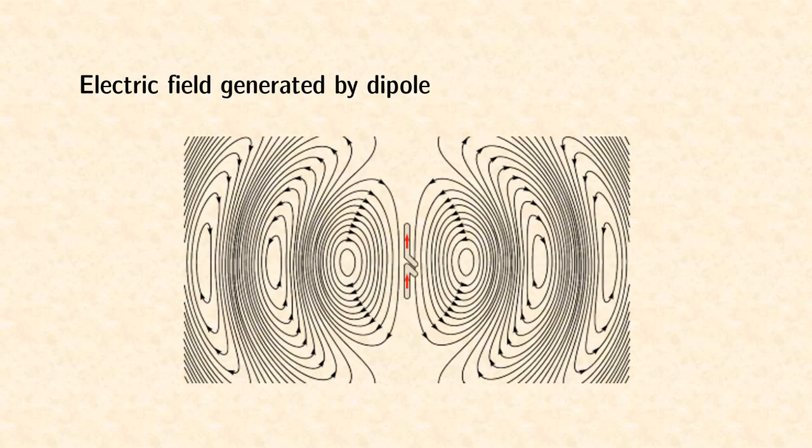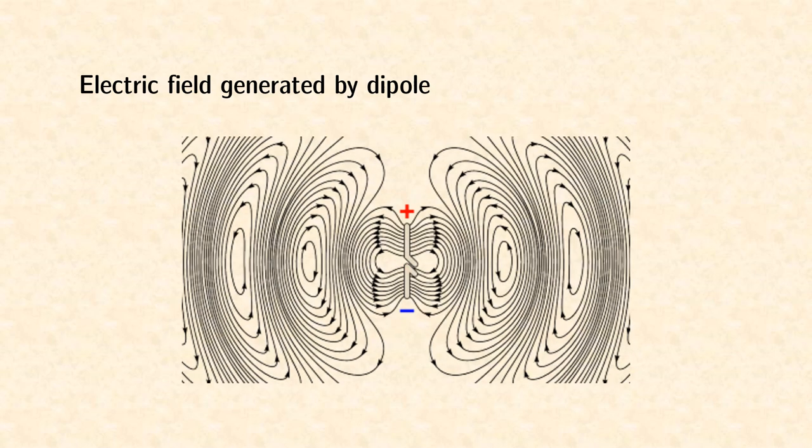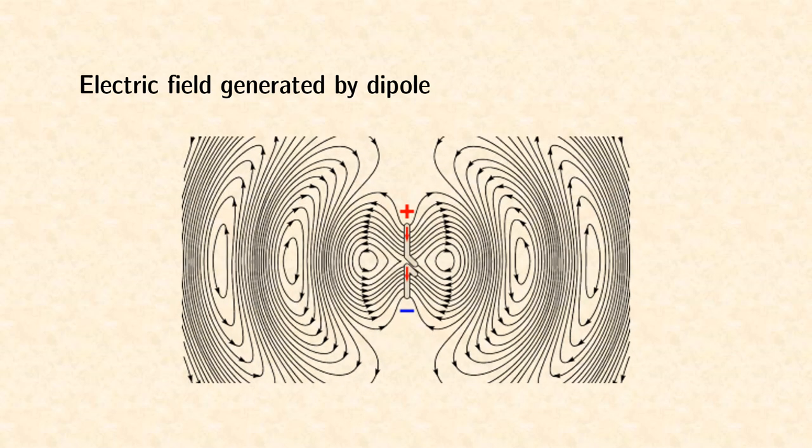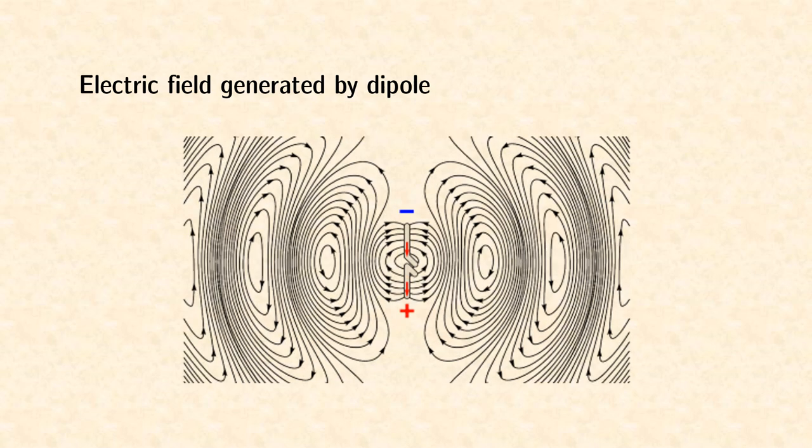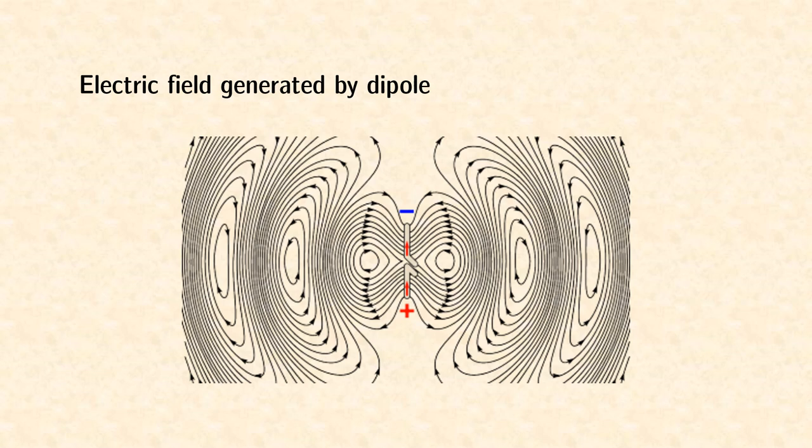Faraday's law predicts that this dynamic looped magnetic field induces a new looped electric field, which induces a magnetic field, and so on and so forth. The last two equations are thus the foundation for describing the generation and propagation of electromagnetic waves.